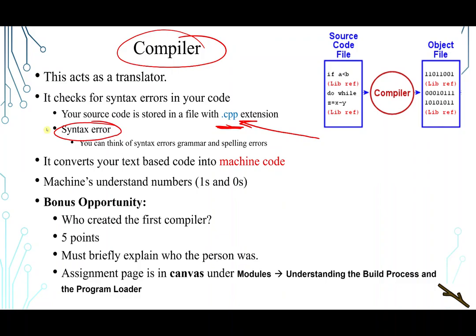Remember, syntax is like grammar and spelling. So that is checking the grammar and spelling errors. It converts your text-based code into a machine code. And this is what we say for simplicity. We say machine code. It's actually object code. But for simplicity, in this class, we are going to call it machine code. Then the machine, the computer is going to understand the numbers, zeros and ones. And this is what a machine code is looking like, zeros and ones.